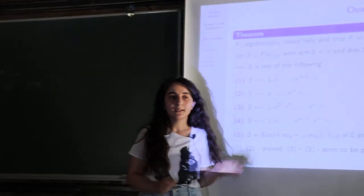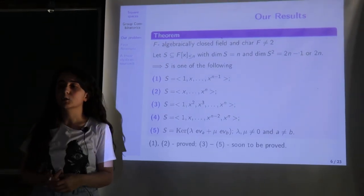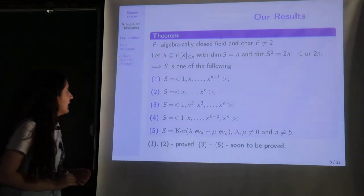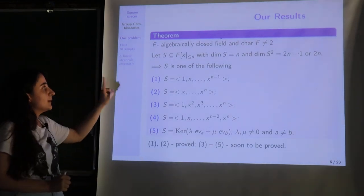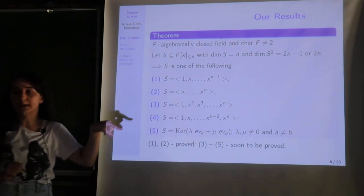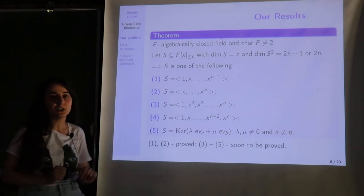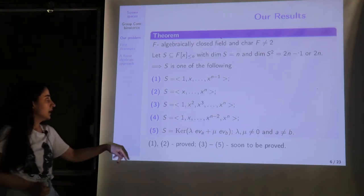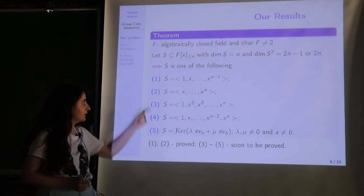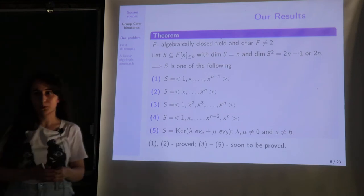Now I can summarize our results. We take an algebraically closed field F with characteristic not equal to 2. If S is a subspace with dimension n and the dimension of S² equals 2n − 1 or 2n, we know S has one of a specific set of forms up to a change of variable. Under certain conditions we showed it must have two of these forms, with forms three to five soon to be proved.